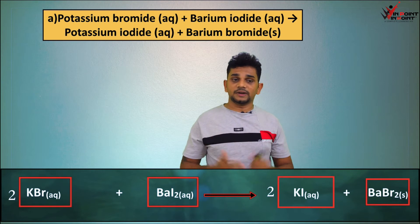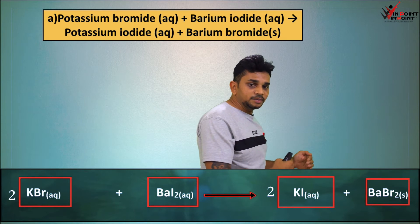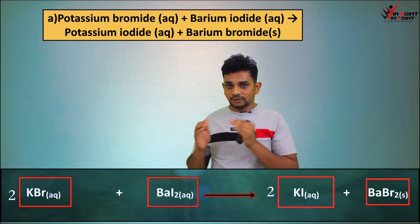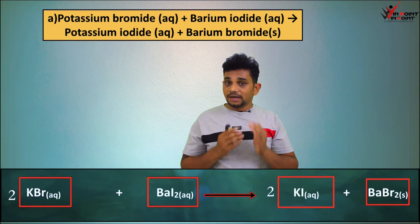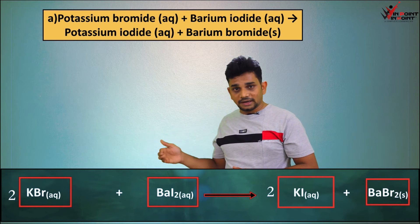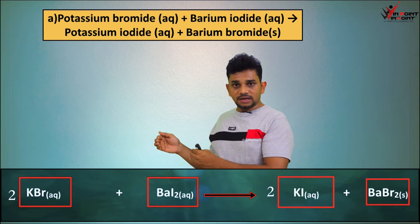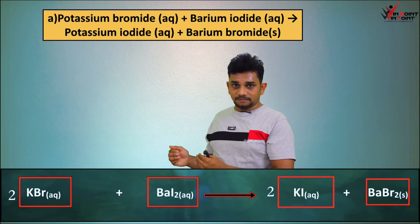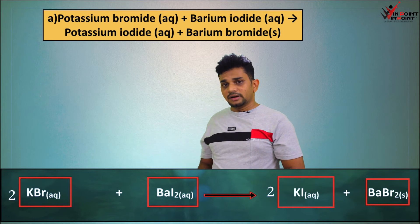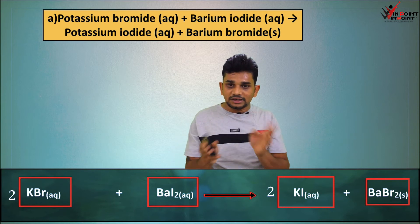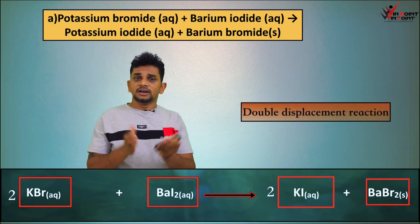Now identify the type of reaction. In the reactant side KBr is combining with BaI2. After the reaction we get KI and BaBr2. They are exchanging ions: bromine was with potassium and after the reaction bromine is with barium; iodine was with barium and after the reaction iodine is with potassium. They are exchanging their ions, so this is a double displacement reaction.